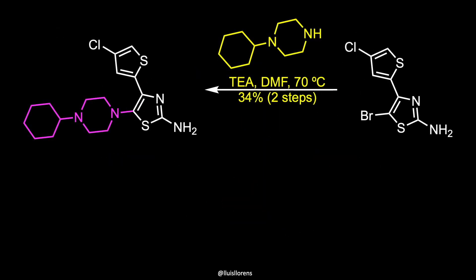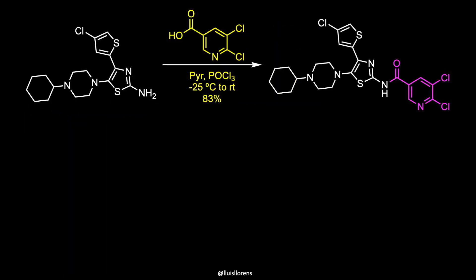Subsequent nucleophilic aromatic substitution with cyclohexyl piperazine provides the desired amine in 34% overall yield. Amide bond formation with dichloronicotinic acid is accomplished by activation with phosphorus oxychloride to give the corresponding nicotinamide in 83% yield.